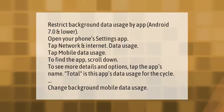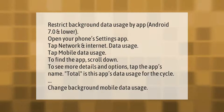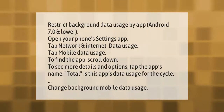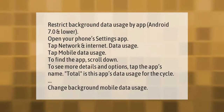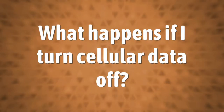To restrict background data usage by app on Android 7.0 and lower: open your phone Settings app, tap Network and Internet, tap Data Usage, then tap Mobile Data Usage. Find the app by scrolling down to see more details and options, then tap the app's name. The total shown is the app's data usage for the cycle. From here you can change background mobile data usage.